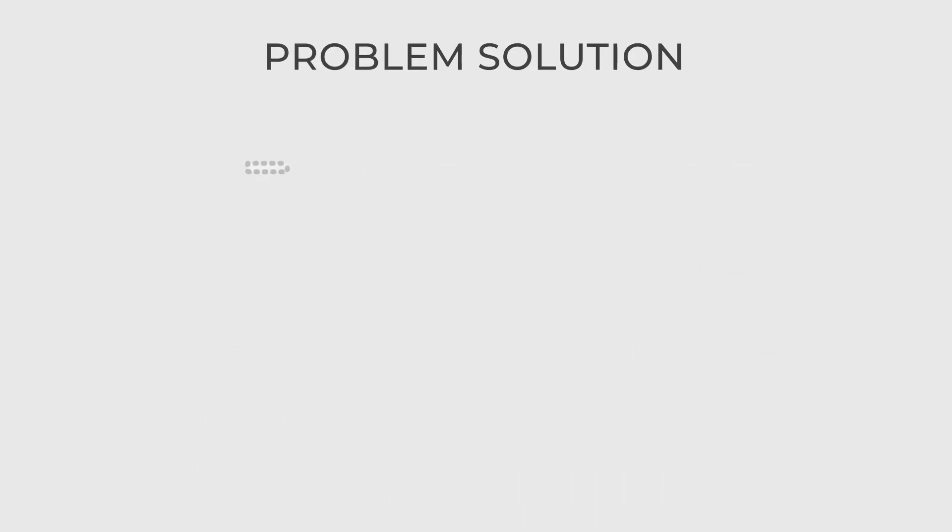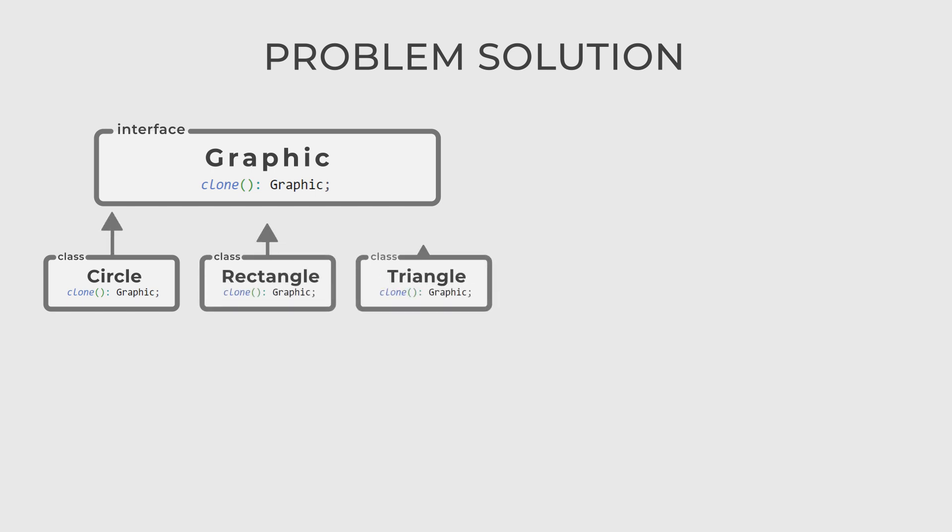So, let's start by creating a top-level graphic prototype interface with the clone method. Graphic elements such as circle, rectangle, and triangle are subclasses of graphic and implement the clone method to create copies of themselves.